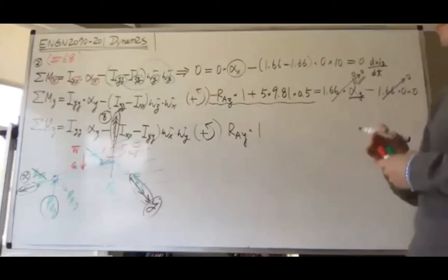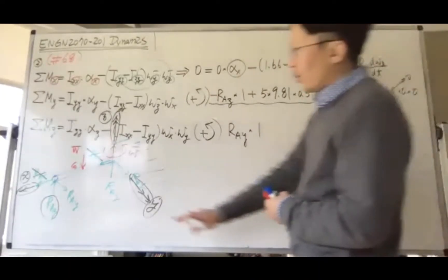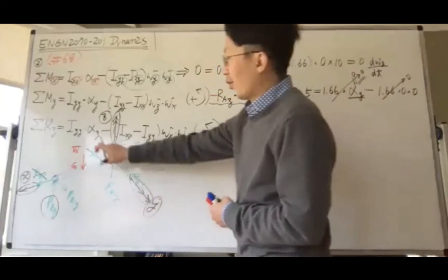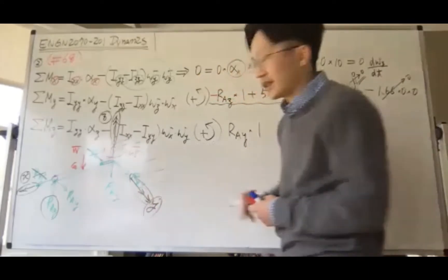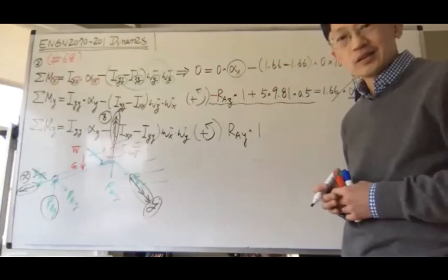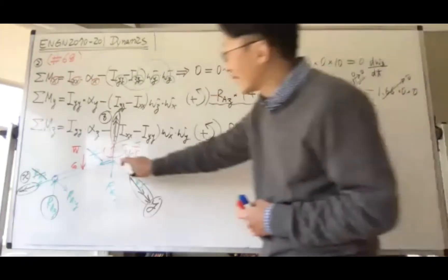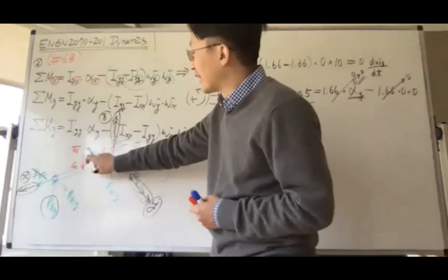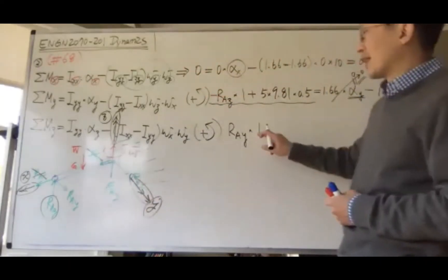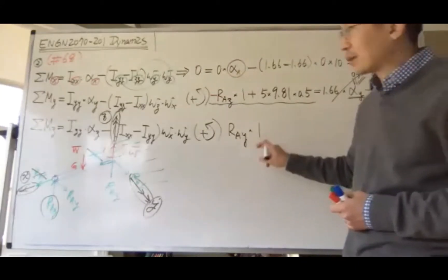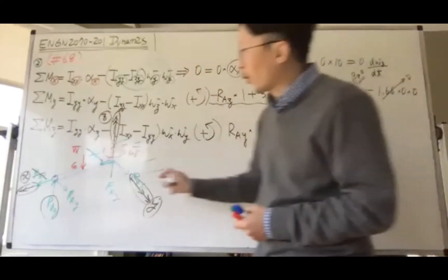There's a problem if you take the moments at the center or at point B—all the reaction forces R_bx, R_by, R_bz won't be considered. If you take the moment at point B, you'll never be able to find the three components. So let's not take the moment equilibrium at point A or point B, because you lose one of them.